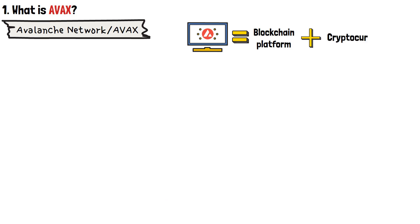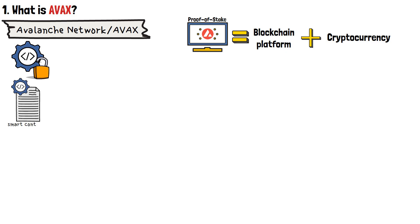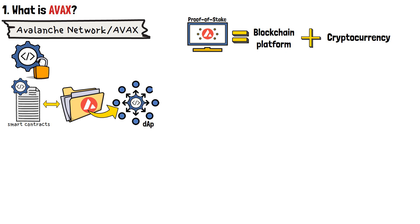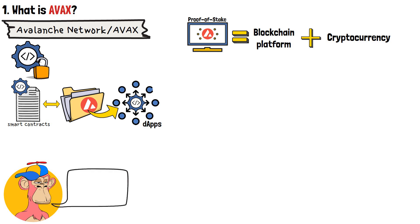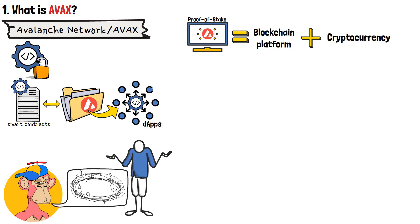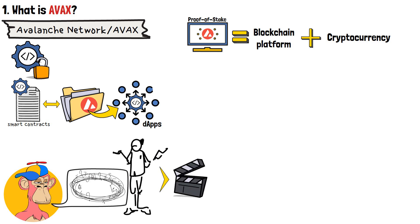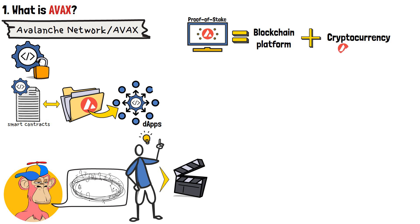First things first, what is AVAX? Allow me to explain in simple terms. Avalanche Network, or AVAX, is both a blockchain platform and a cryptocurrency, similar to the double set you know as Ethereum. It's an open-source, proof-of-stake crypto network using smart contracts to support its blockchain projects. Mainly, those projects include creating decentralized applications, or dApps. Like most blockchains, Avalanche also has a native token called AVAX. It serves as a utility token and has plenty of uses in the Avalanche ecosystem, including transactions, staking and governance. But I'll get to that in a minute.